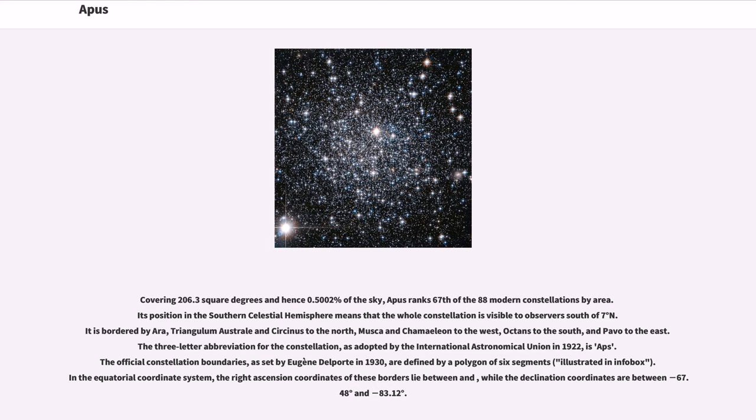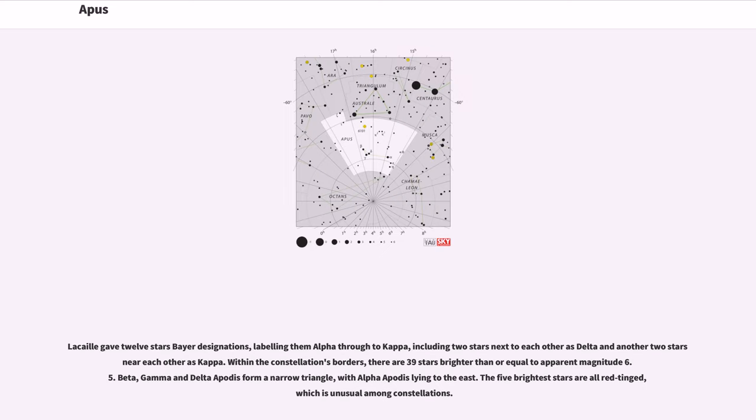The three-letter abbreviation for the constellation, as adopted by the International Astronomical Union in 1922, is Aps. The official constellation boundaries, as set by Eugene Delporte in 1930, are defined by a polygon of six segments, illustrated in infobox. In the equatorial coordinate system, the right ascension coordinates of these borders lie between, while the declination coordinates are between minus 67.48 degrees and minus 83.12 degrees. De Lacaille gave 12 stars Bayer designations, labeling them Alpha through to Kappa, including two stars next to each other as Delta and another two stars near each other as Kappa. Within the constellation's borders, there are 39 stars brighter than or equal to apparent magnitude 6.5.